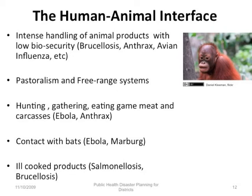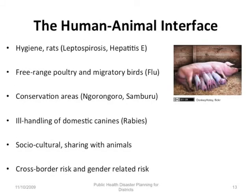Contact with birds predisposes to Ebola and Marburg. Ill-cooked products cause salmonellosis and brucellosis. Poor hygiene and contact with rats predisposes to leptospirosis and hepatitis E. Free-range poultry and migratory birds predispose to avian influenza. Conservation areas like Ngorongoro and Samburu pose risks. Ill-handling of domestic canines predisposes to rabies. Social-cultural factors including sharing accommodation with animals, cross-border risk, and gender-related risk also play a role.